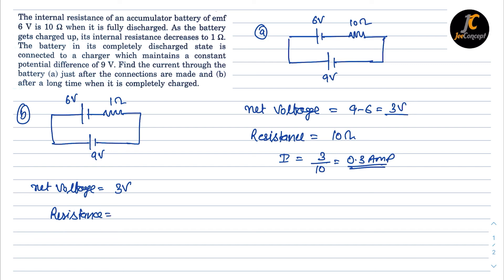So the current in the circuit will be 3 upon 1, that means 3 ampere. This is the solution to this problem.